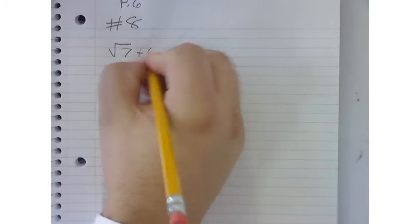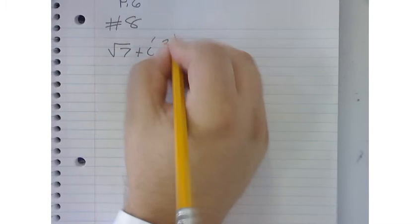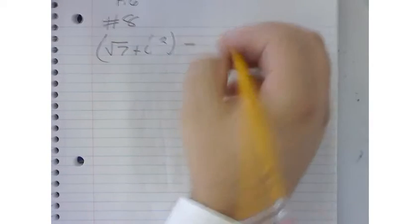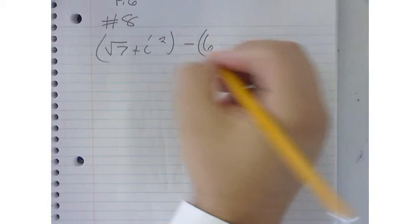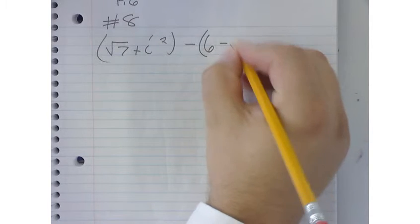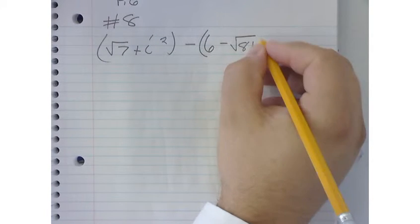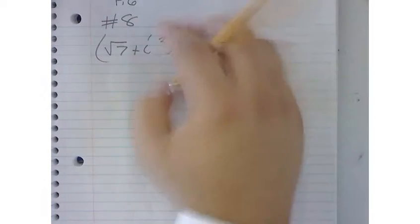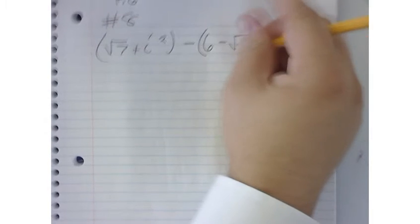We are given the square root of 7 plus i squared minus 6 minus the square root of 81, or negative 81. So that one looks pretty crazy, right?